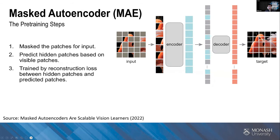One important work in this domain is the Masked Autoencoder (MAE). The main concept is masking random patches of the input image and reconstructing them. It uses an encoder-decoder architecture where the encoder only operates on visible patch subsets, and a simple decoder reconstructs the original image from latent representations of visible parts. If the masking ratio is very high — for example 75% — it produces a meaningful self-supervised task. This efficiently trains large models, increasing training speed by three times or more while improving accuracy.